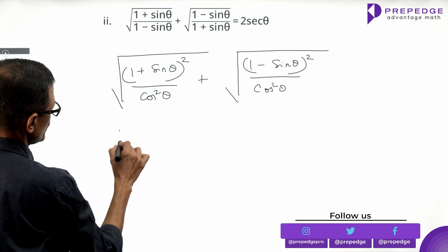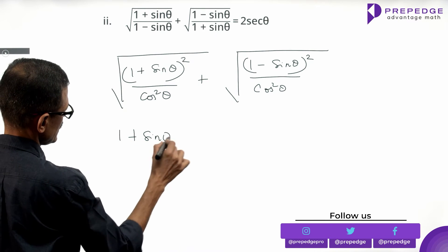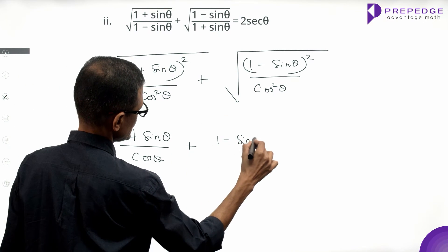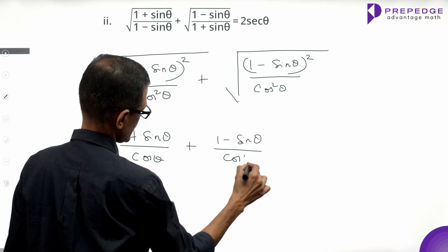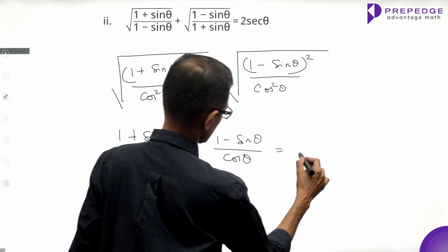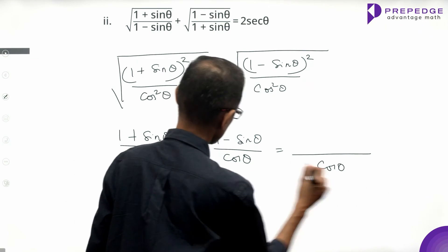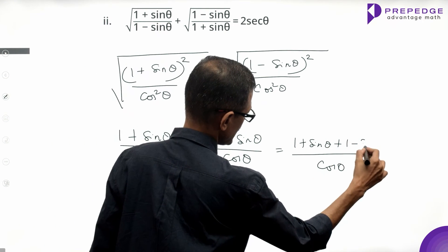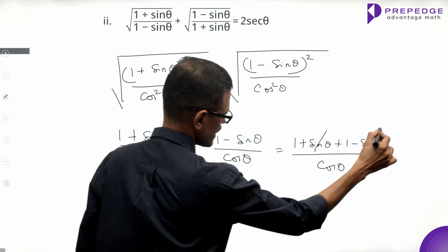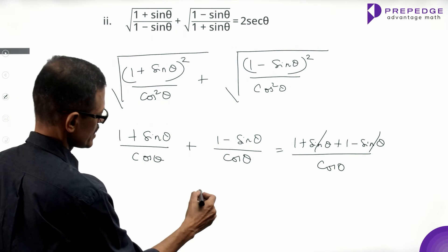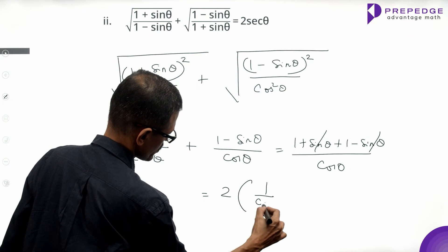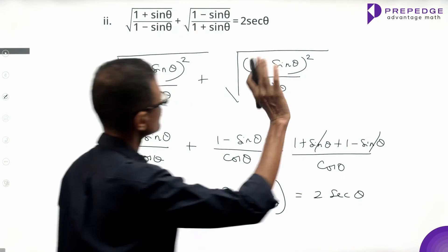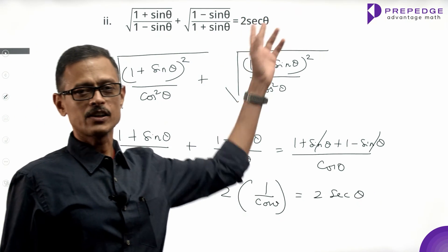Taking square roots, the left-hand side becomes (1 plus sin theta) over cos theta, plus (1 minus sin theta) over cos theta. Since cos theta is the common denominator, this becomes (1 plus sin theta plus 1 minus sin theta) over cos theta. The sin theta and minus sin theta cancel, leaving 2 over cos theta, which equals 2 times 1 over cos theta, and since 1 over cos theta equals secant theta, the answer is 2 secant theta, which is what we needed to prove.